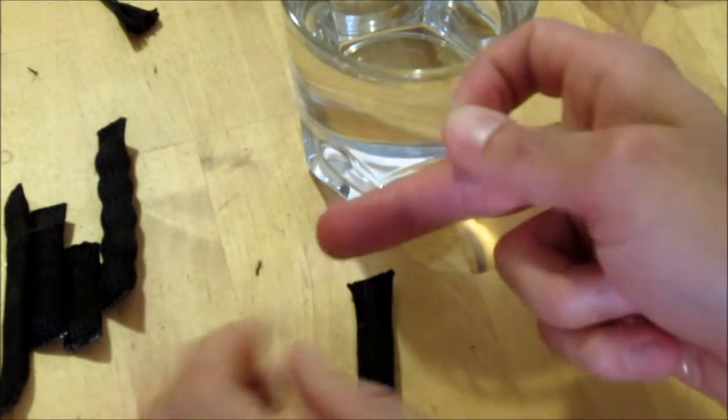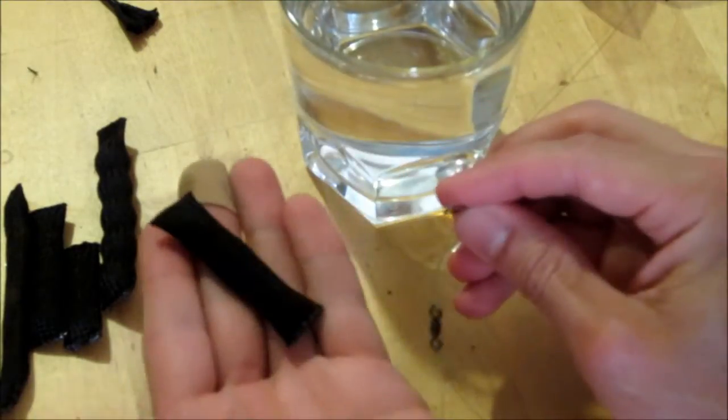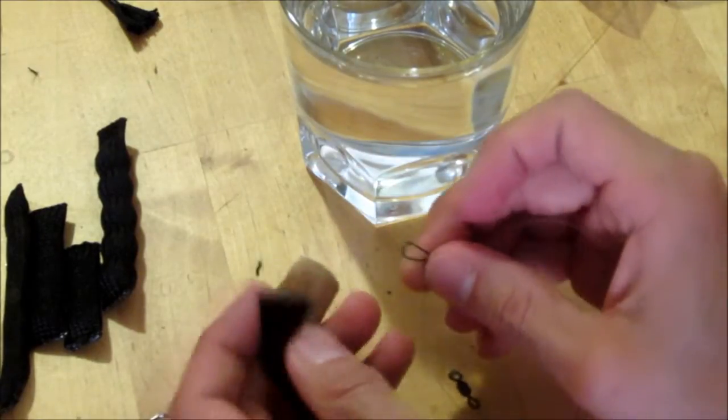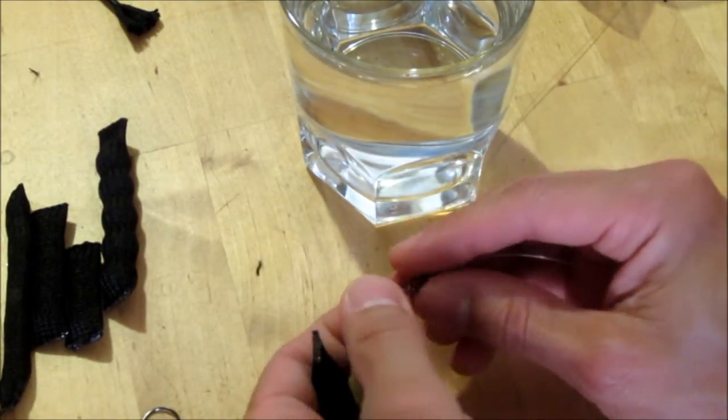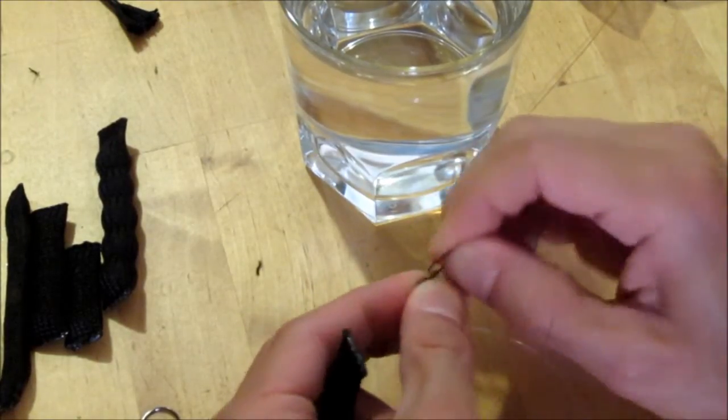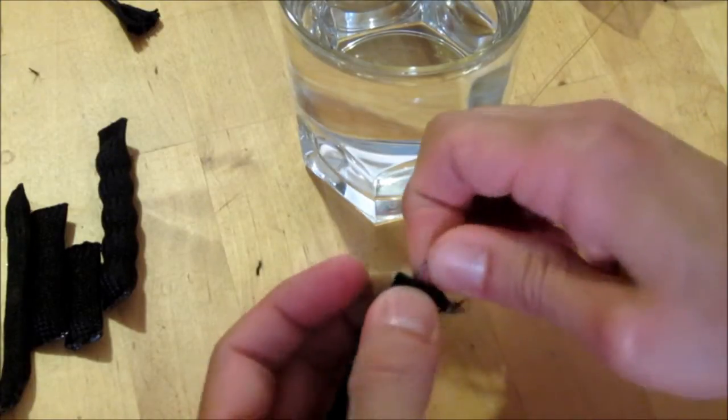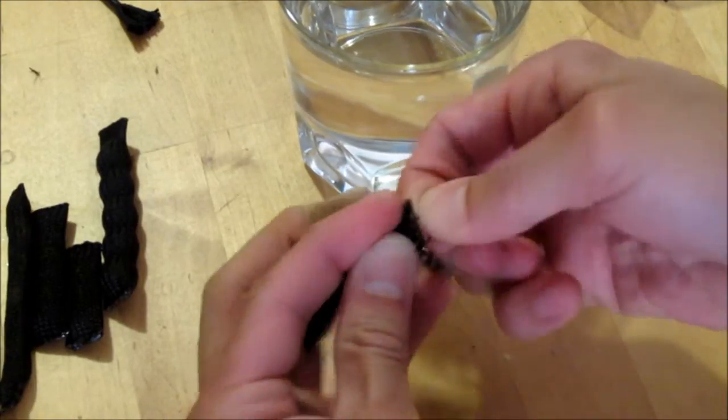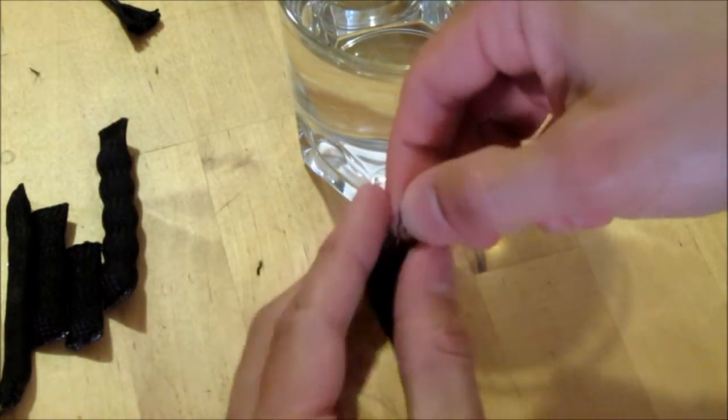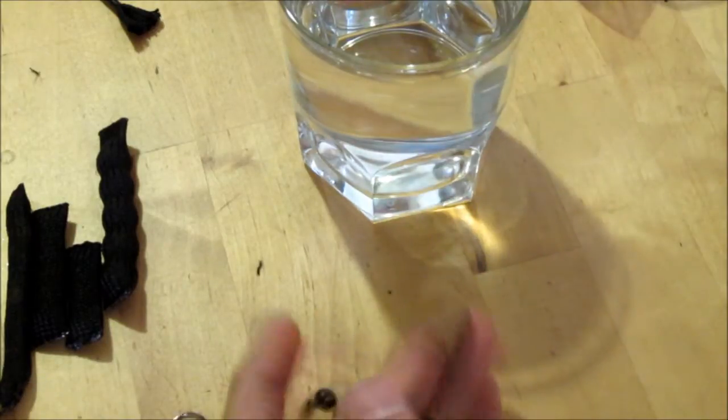So our standard snap swivel is where we attach our weight. Some people heat up a nail and burn a little hole in the end of these. I find that unnecessary, at least with the type of snap swivels I use. Pretty thin wire and I just stick these right through the shoelace material. Just pop them right through. Close that swivel, close that snap. And there you go.